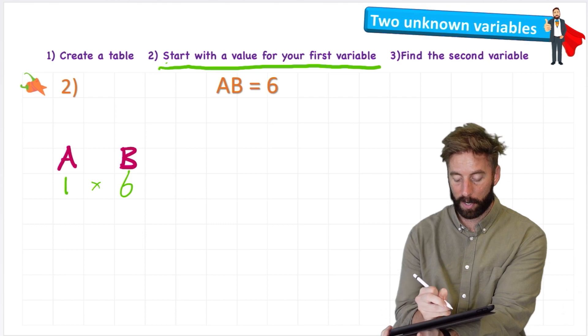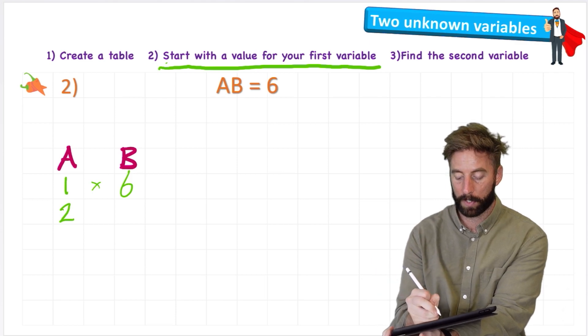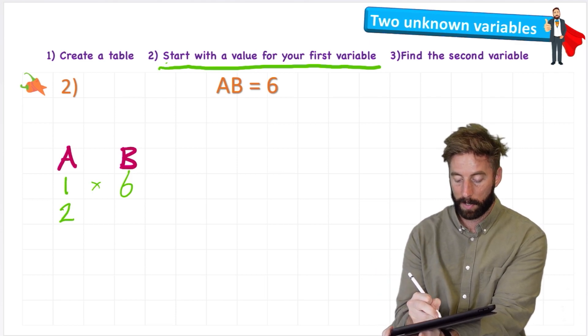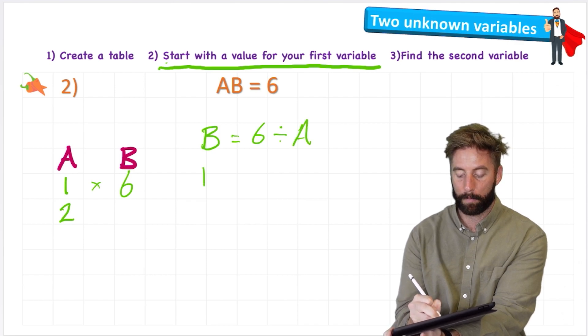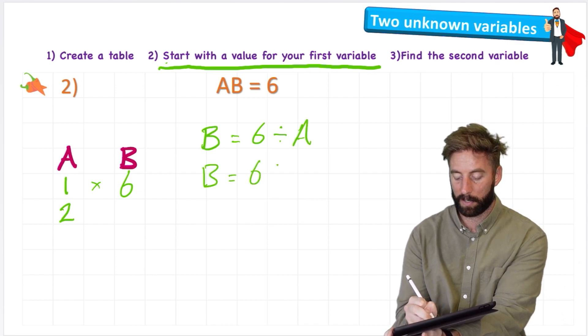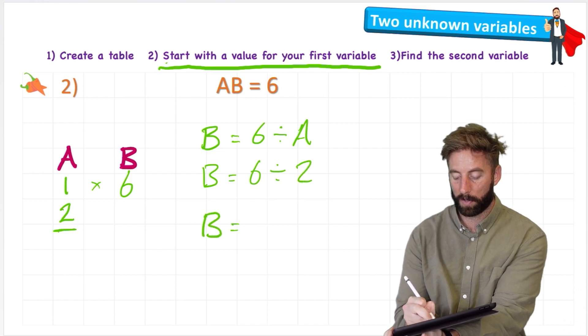Okay, let's look at another one. Let's use 2 for our variable of A this time. And again we're going to use our inverse to help us. So A × B = 6. B on its own must be B = 6 ÷ A, and B = 6 ÷ 2. So therefore B = 3.